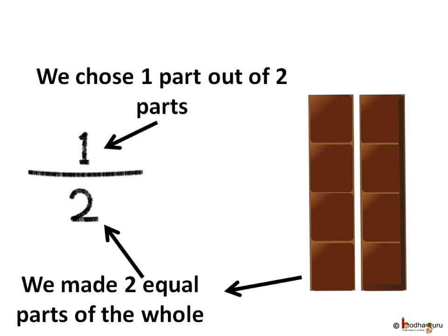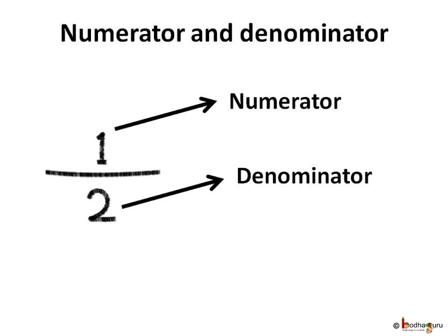That means we shall give one part of the chocolate bar out of the two parts. Here, one is called the numerator and two is called the denominator.